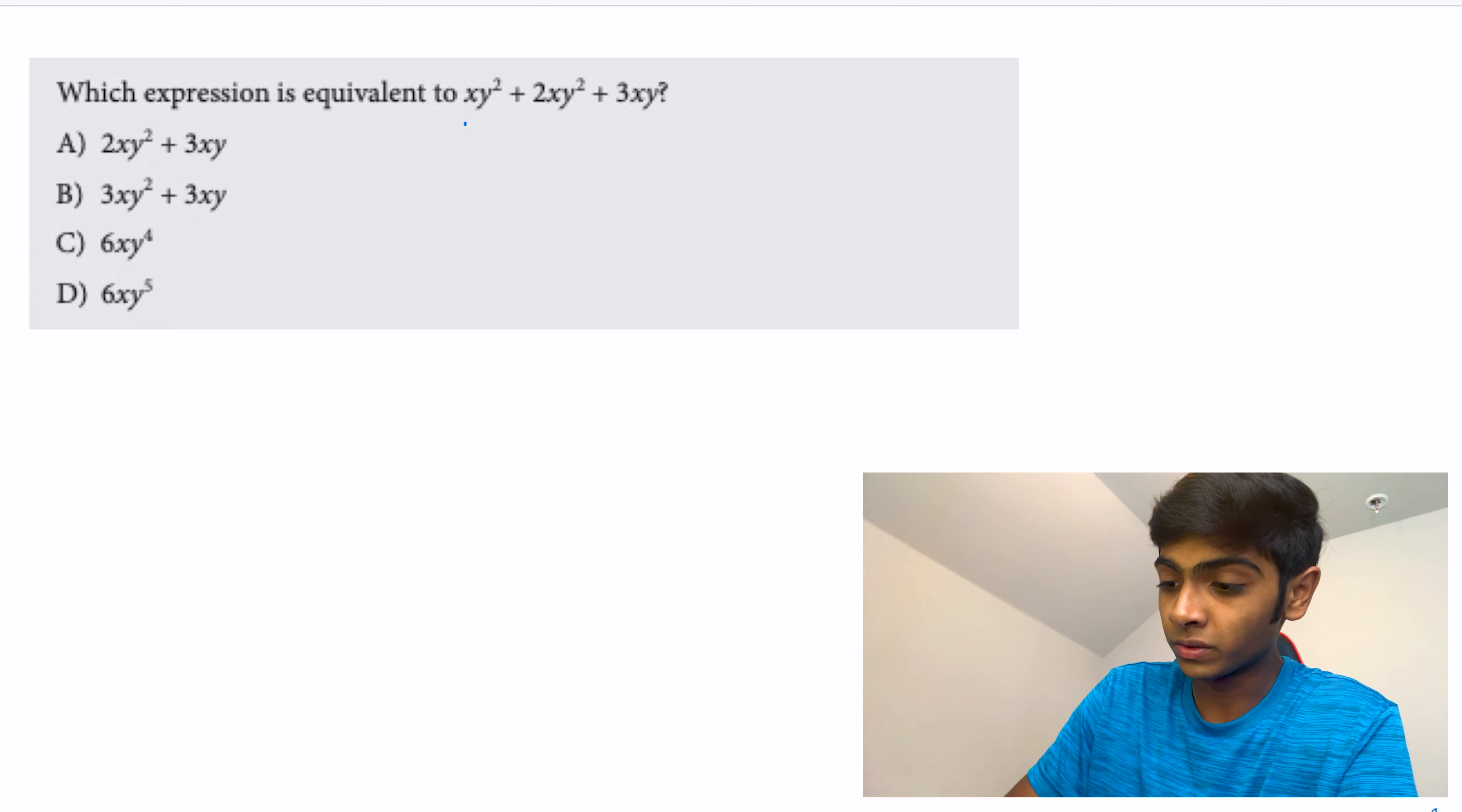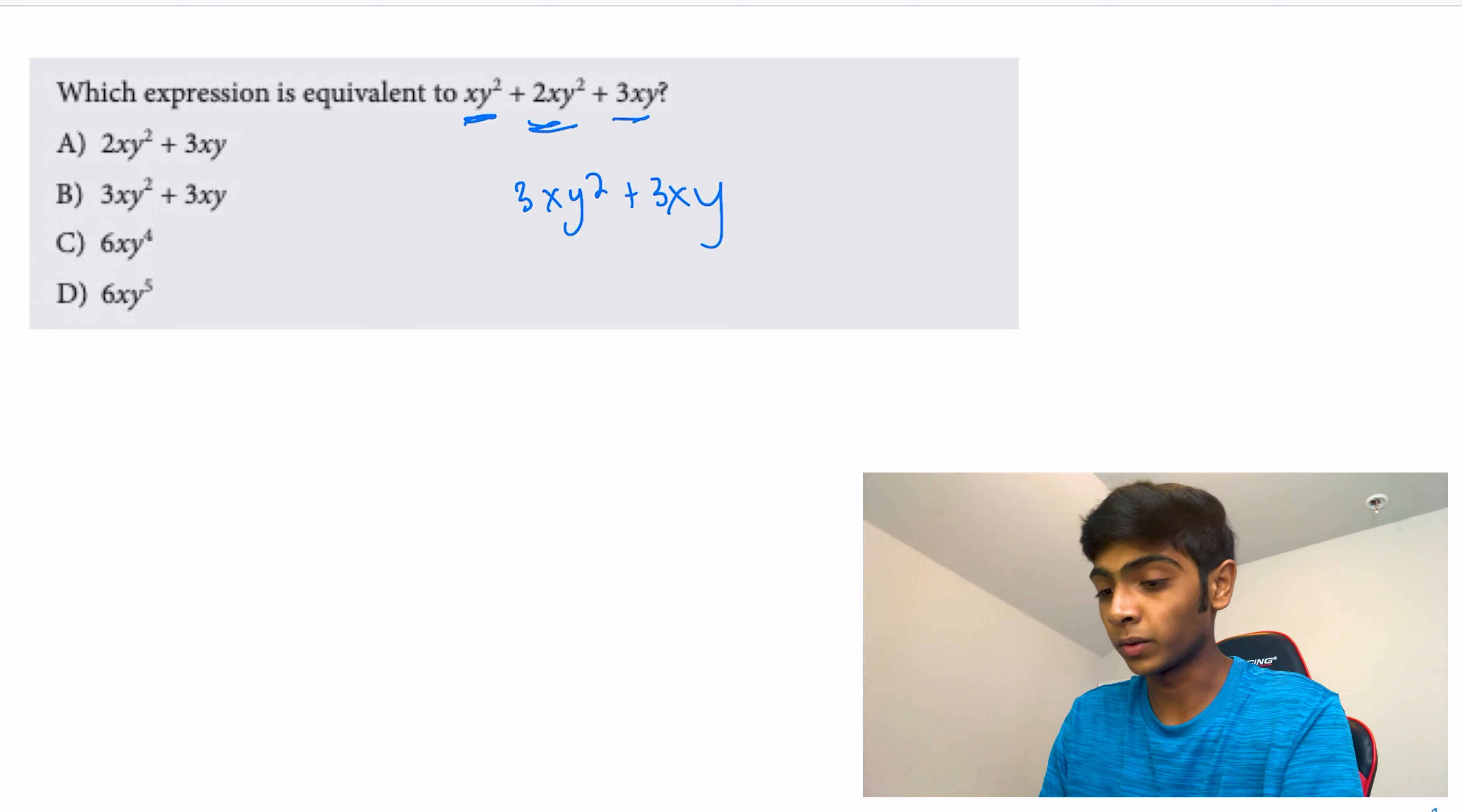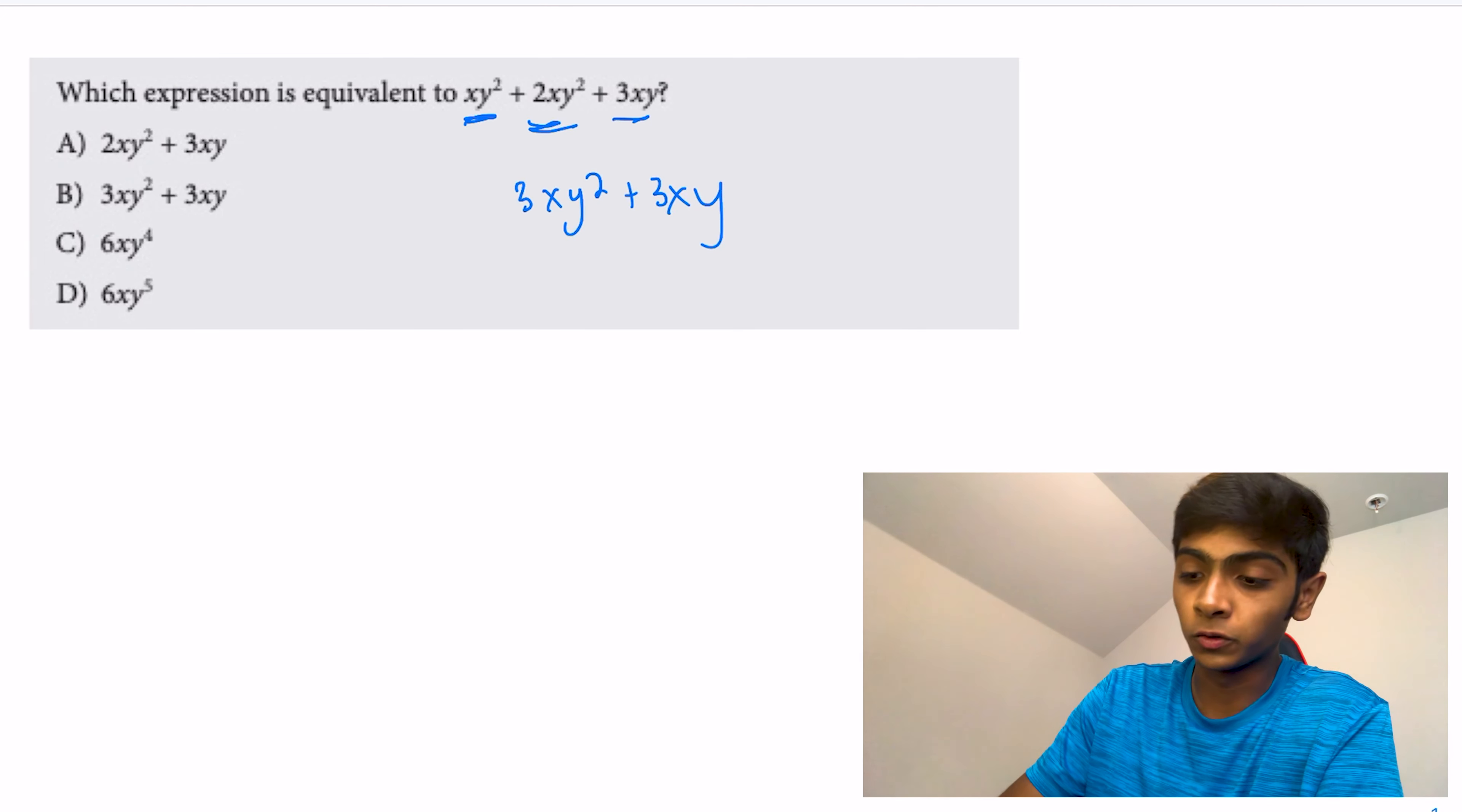All we have to do is add xy² and 2xy² together to get 3xy², and we can't add this to anything else, so that stays as it is. We get 3xy² + 3xy, which is answer choice B, that's our answer.